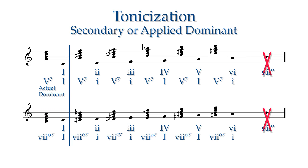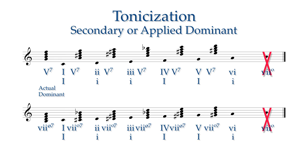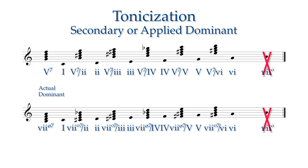When we analyze a secondary dominant, we will always use an uppercase V to indicate a true dominant and the seven diminished to indicate the leading tone. We then write a forward slash, spoken as the word "of", followed by the Roman numeral of the note that is being tonicized. So we might say a V of V, or seven diminished of two.